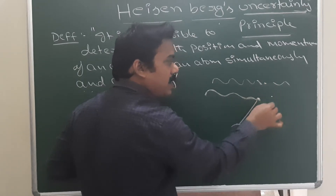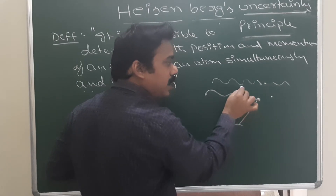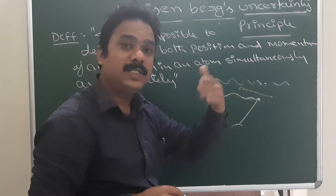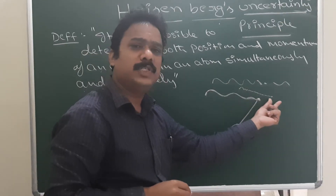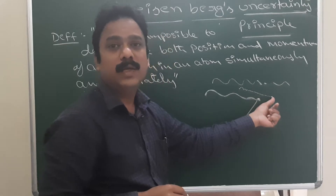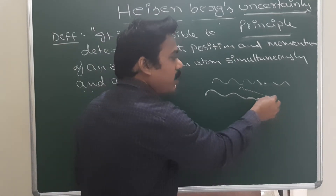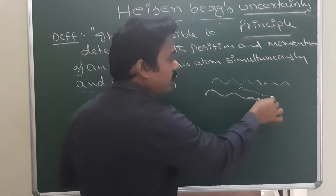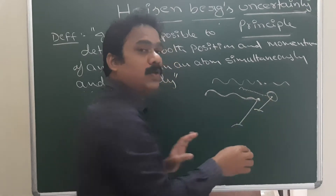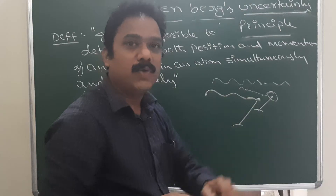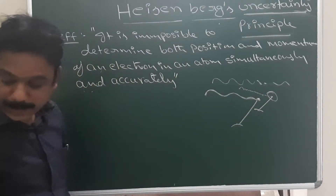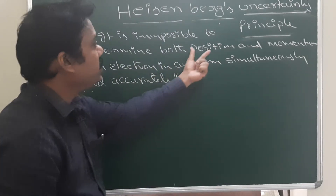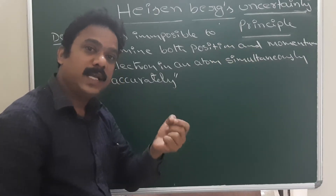The electron is a small particle. To observe it, you need to use high-energy radiation. However, using such radiation disturbs the electron, making it impossible to accurately determine both its velocity and position at the same time.